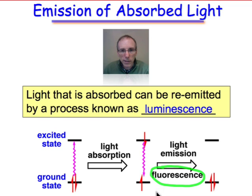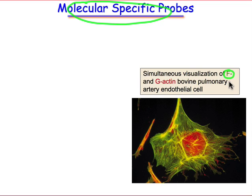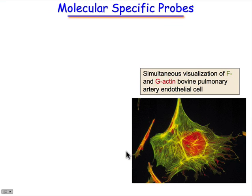Fluorescence is a very powerful tool that shows up in many examples in molecular biology. Here's an example that illustrates the idea of molecular-specific probes. This cell has been colored based on the use of two fluorophores, or fluorescent-emitting molecules. One fluorophore that's green is tagged with a recognition element specific for F-actin, and another that's red is specific for G-actin. We can see spatially where the F-actin and G-actin are simply by noting the colors in this image.